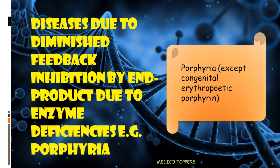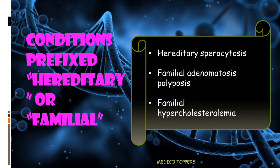Diseases due to diminished feedback inhibition by end product from enzyme deficiency mainly include porphyria. All porphyrias are autosomal dominant except congenital erythropoietic porphyria. The easiest clue to remember autosomal dominant diseases is conditions prefixed with 'hereditary' or 'familial,' such as hereditary spherocytosis, familial adenomatous polyposis (a pre-malignant condition), and familial hypercholesterolemia.